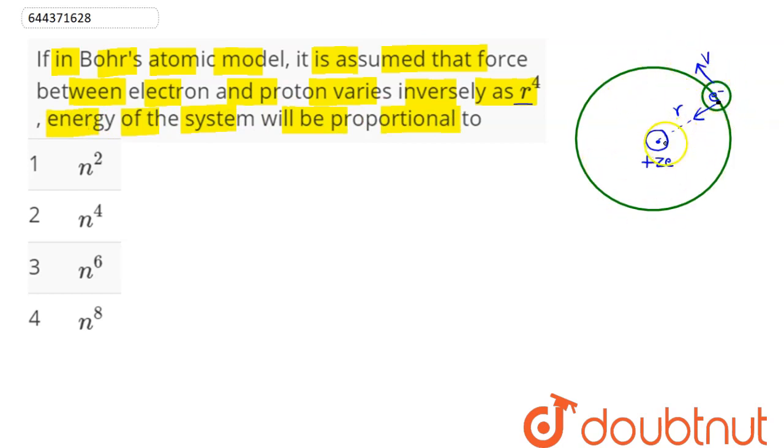Here we can see the necessary centripetal force is provided by this force which varies inversely as r power 4. So here this proportionality constant is some b, so this comes as b divided by r power 4.